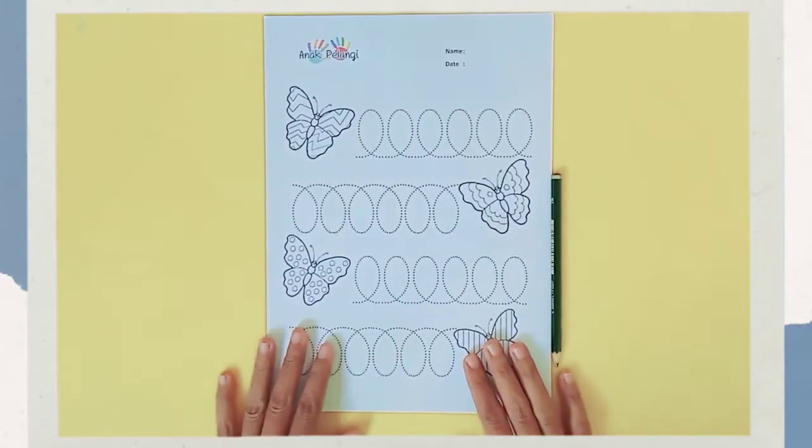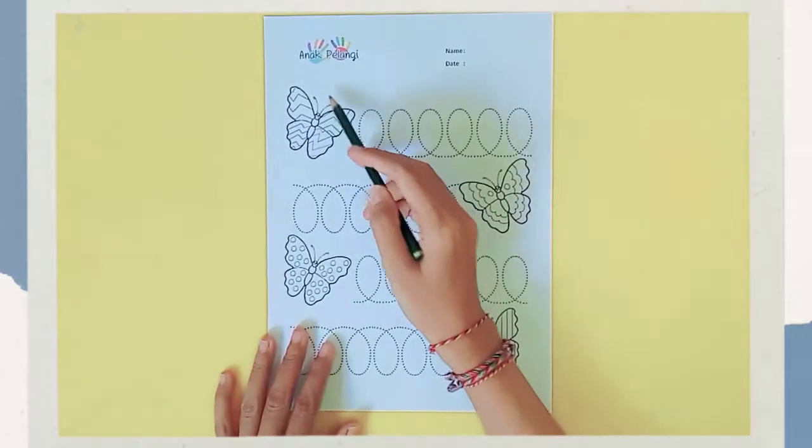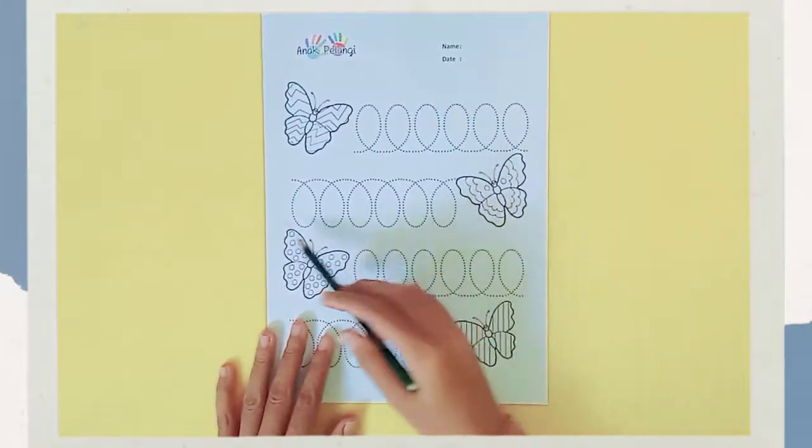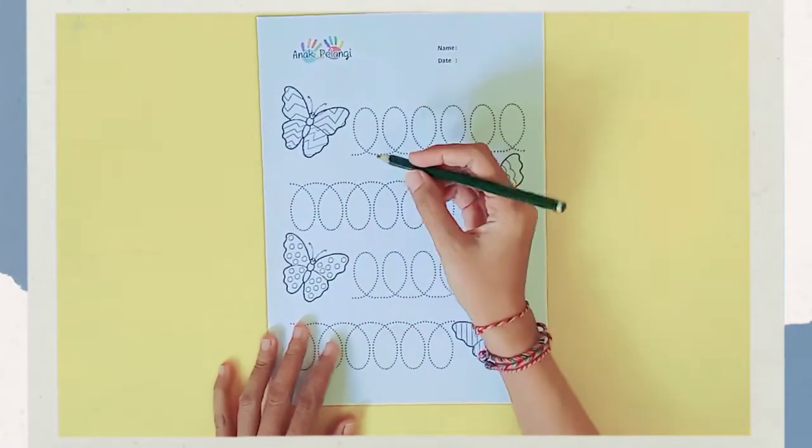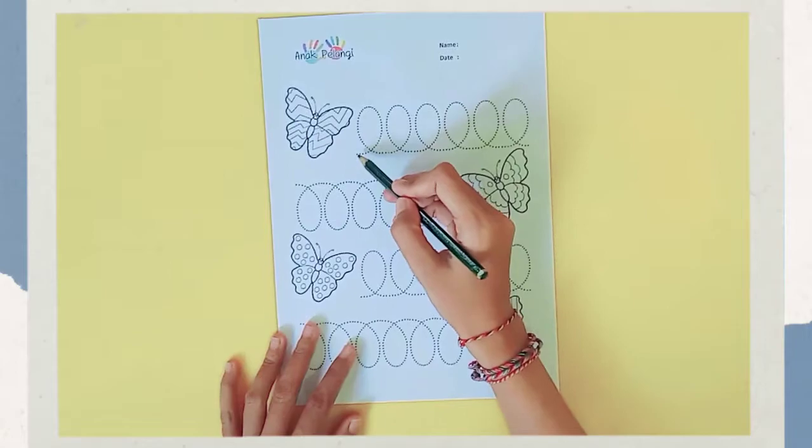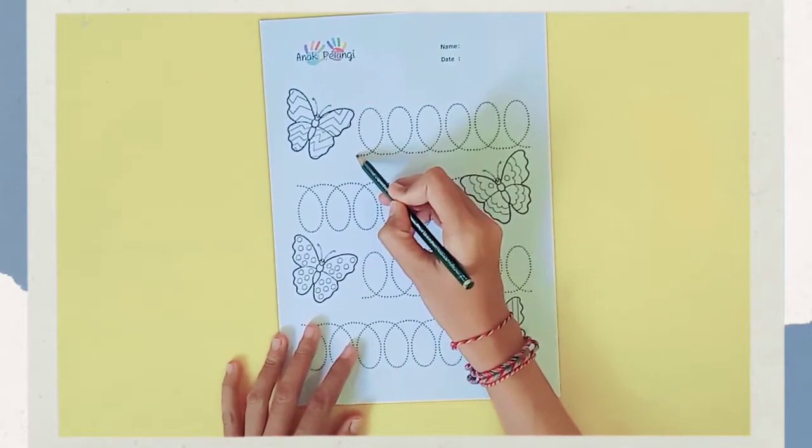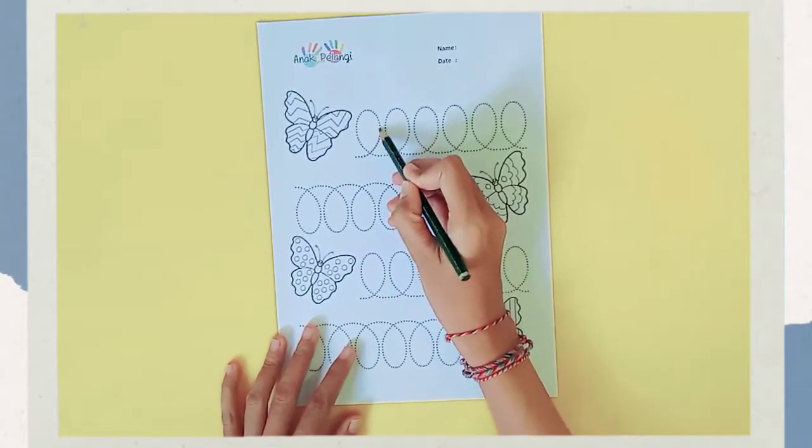Now let's redo this worksheet. Can you see this is the picture of butterflies? Okay, now let's follow the dot from here and up there.